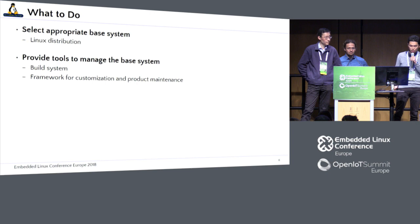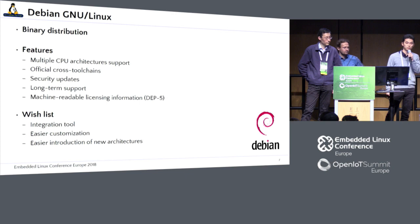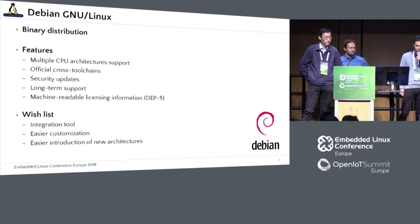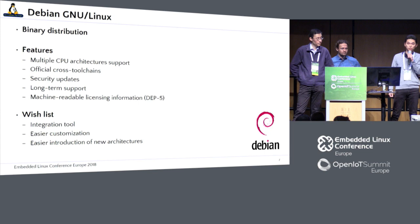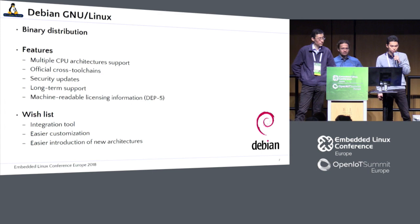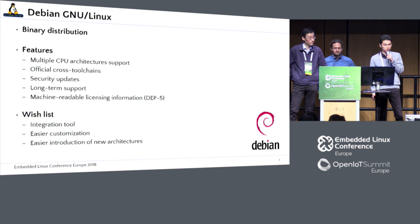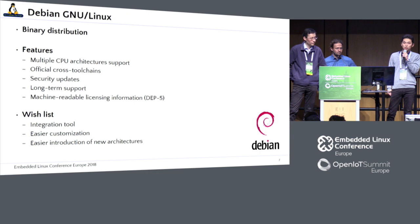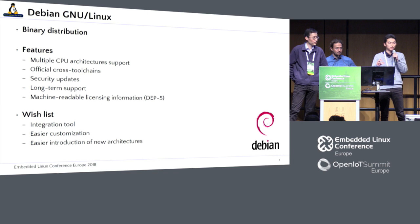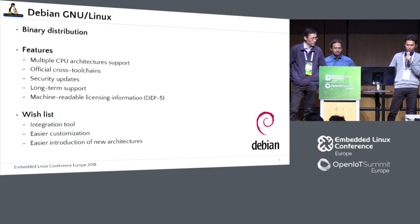One option is Debian — a well-known binary distribution. From a long time ago, it supports multiple CPU architectures. Recently, it also supports the cross toolchain officially, from Debian Stretch. Many security updates are available. The Debian LTS team supports long-term maintenance: two years plus two years, five years in total for specific packages. Many other features available that are used for products.